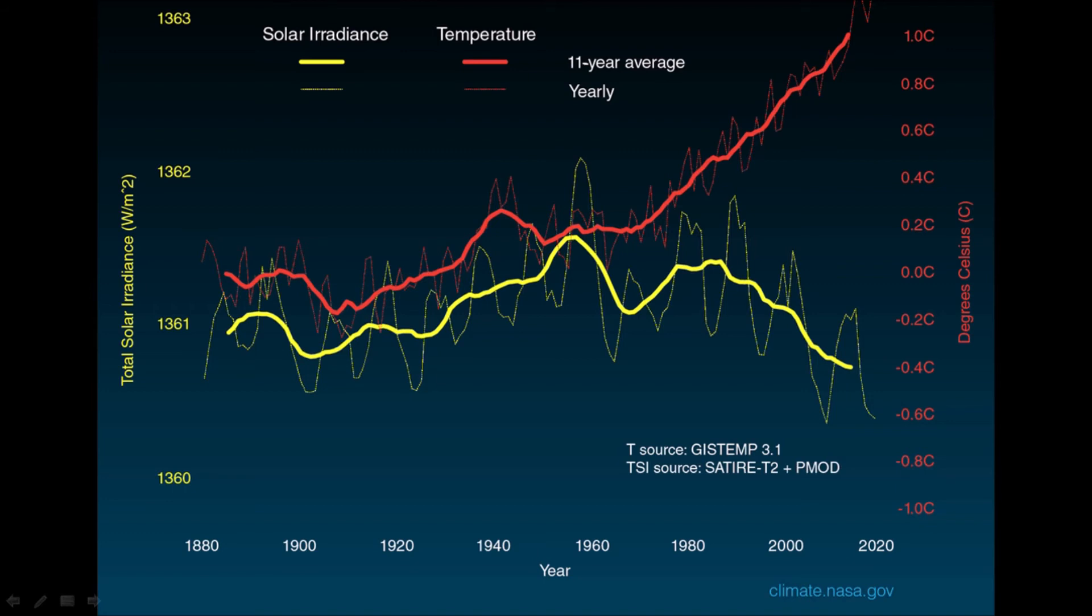However, we can connect a trend between solar output and temperature increases between 1880 and about 1960. So these cooler periods, such as the Little Ice Age, and warmer periods, such as the Medieval Warm Period, may have been caused by changes in sunspot activity.